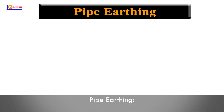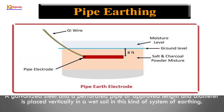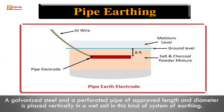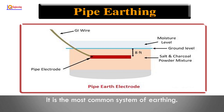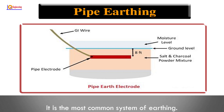Pipe earthing: A galvanized steel perforated pipe of approved length and diameter is placed vertically in wet soil in this kind of earthing system. It is the most common system of earthing.